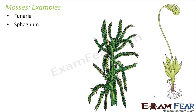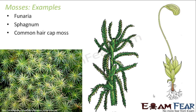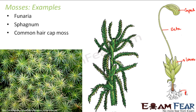Let us look at some examples of mosses: Funaria, Sphagnum, and common hair cap moss. If you look at Funaria, this portion is the capsule. This is the seta, the stalk-like structure which actually takes nutrition to the capsule. And these are the leaf-like structures, and these are the rhizoids.